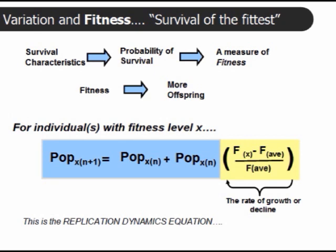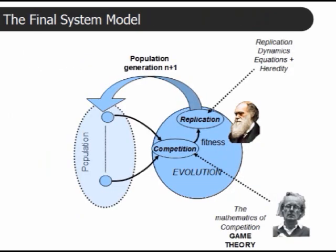We finally arrive at this system model, which is essentially a population going into a process of evolution and producing the next generation, generation n plus 1. In that process, we have two key elements. One is replication based on fitness, and this is the replication dynamics that we came up with on the previous slide.